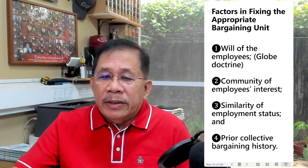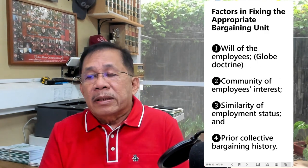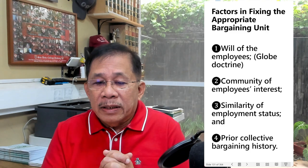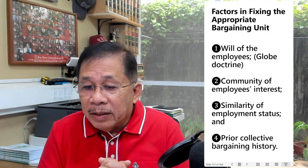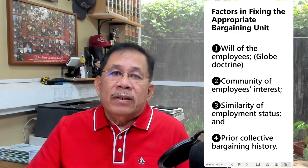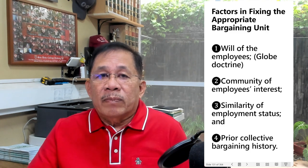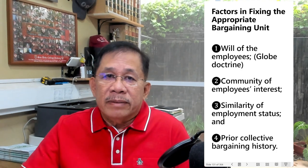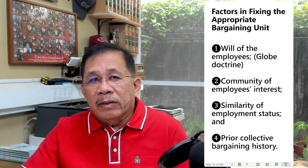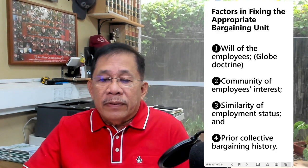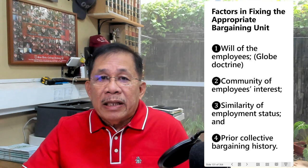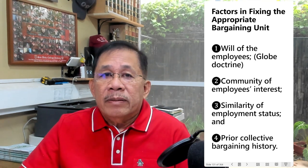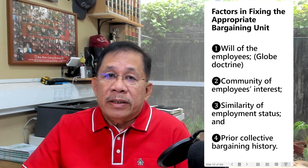There are certain factors to be considered in fixing the appropriate bargaining unit. First is the will of the employees, or the Globe Doctrine. Second is the community of interest. Third is the similarity of employment status. And lastly, prior bargaining history.